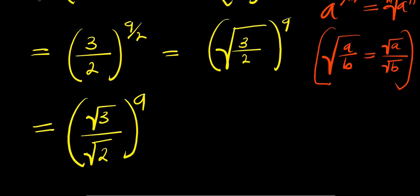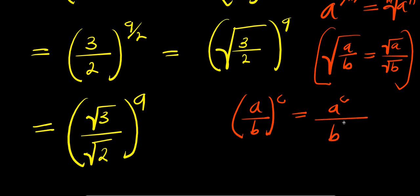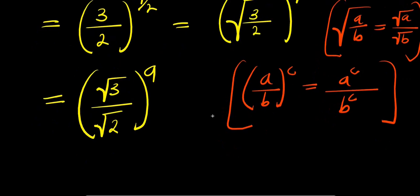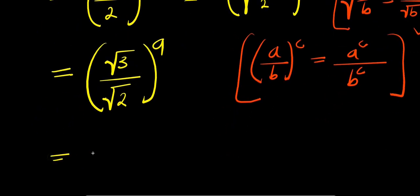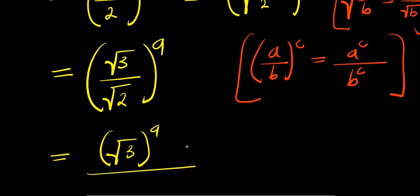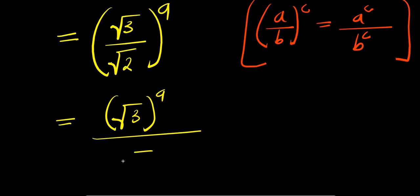Now from here, if you also have a divided by b raised to the power of c, this equals a to the power of c divided by b to the power of c. So that means, you simply have square root of 3 raised to the power of 9, divided by square root of 2 raised to the power of 9.